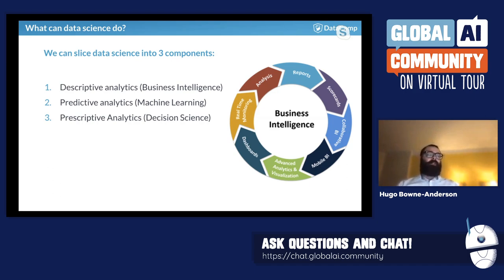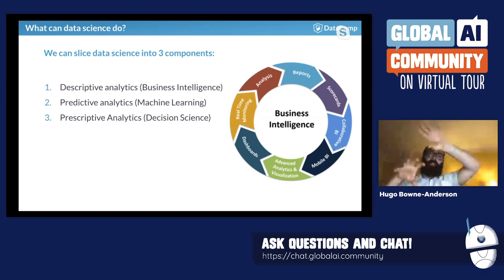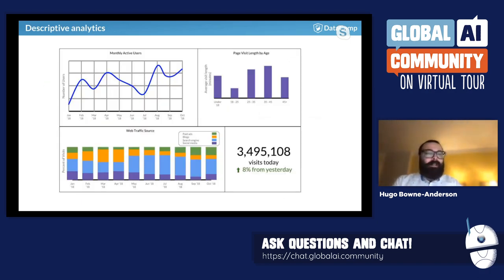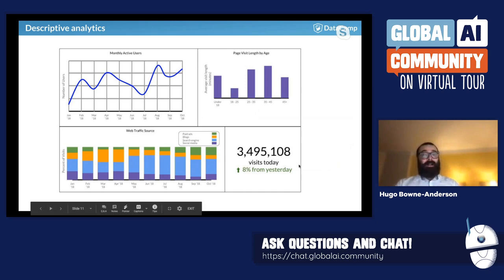A lot of business leaders feel that the data work and AI work at their organizations may not be efficiently incorporated into decision science. This is why McKinsey has been pushing the new role of Data Translator — an interface between the decision function and the data function to help translation across that layer. In terms of descriptive analytics, we're talking about dashboards with monthly active users or bar plots of page visit length by age, or simply a number like the count of website visits with day-over-day change.